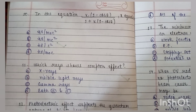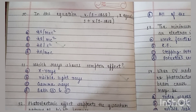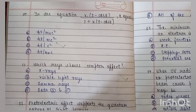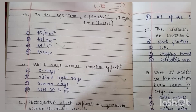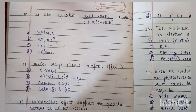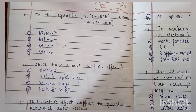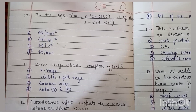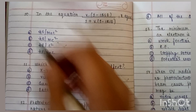Question number 10: in the equation x(1 − cosθ) / (1 + x(1 − cosθ)), x equals — (A) hν / m₀c², (B) hν / mc², (C) hν / c², or (D) hν / m₀c? The correct answer is A.